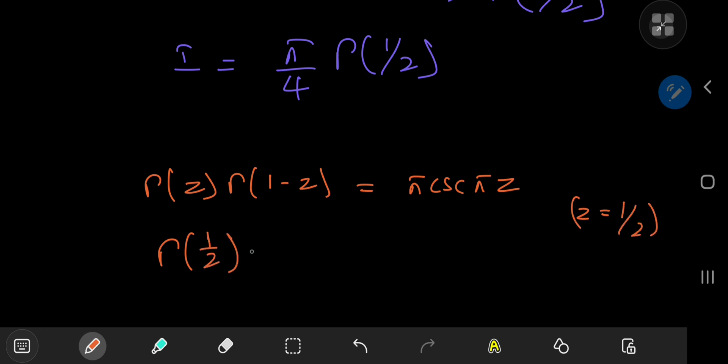So if you let z equal to 1 half, then you get gamma 1 half times gamma 1 minus 1 half, which is 1 half, equal to pi times the cosecant of pi by 2.